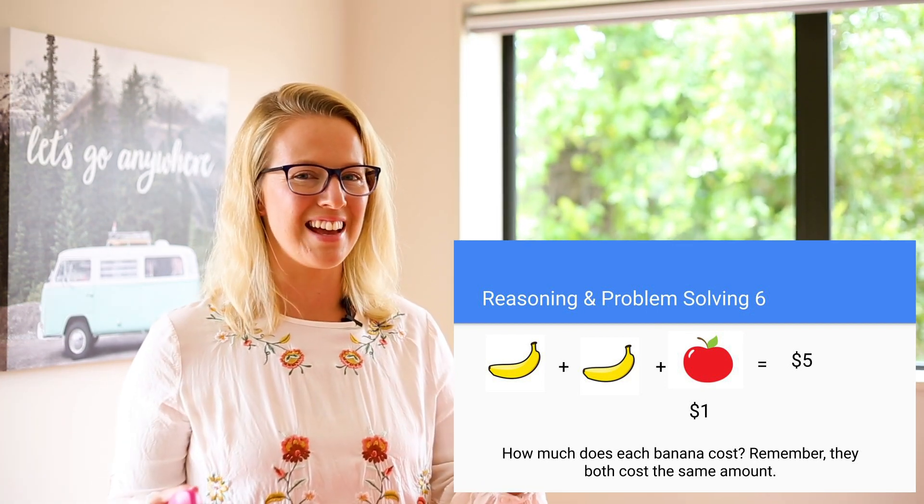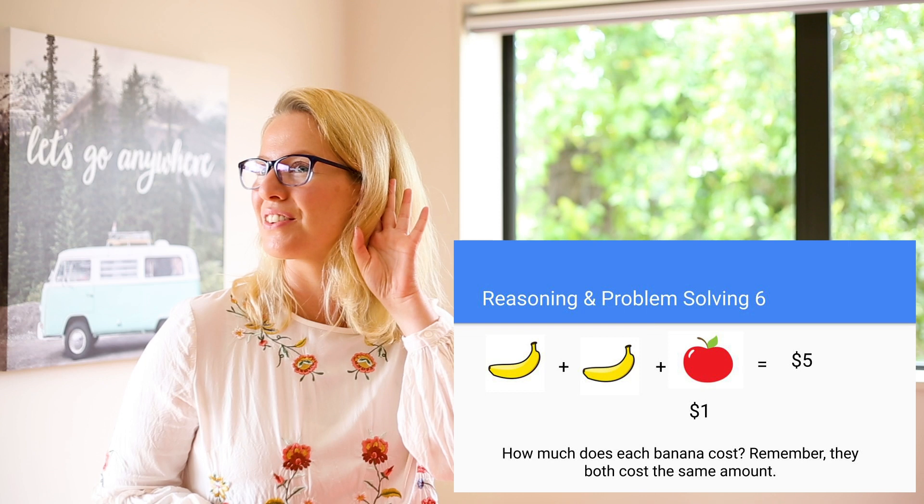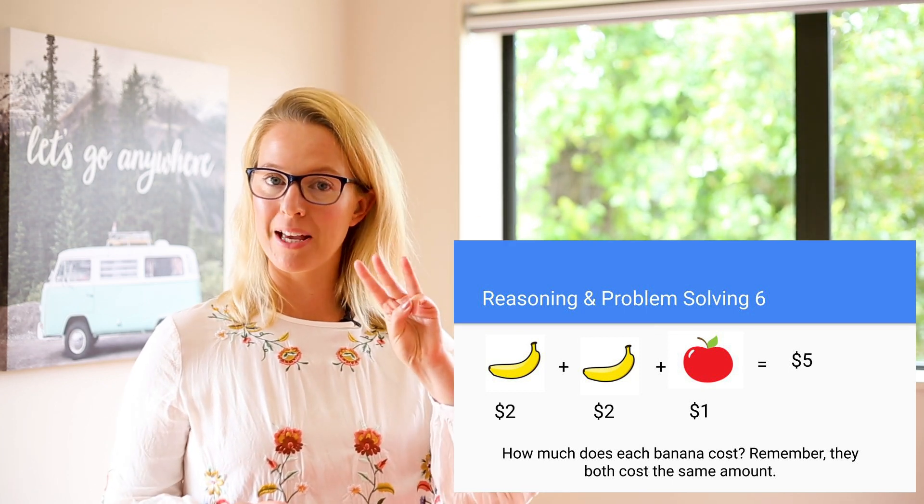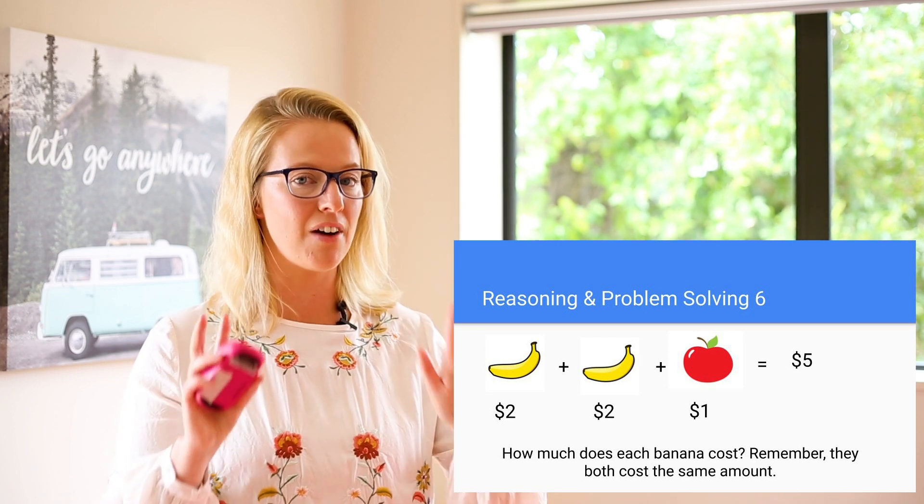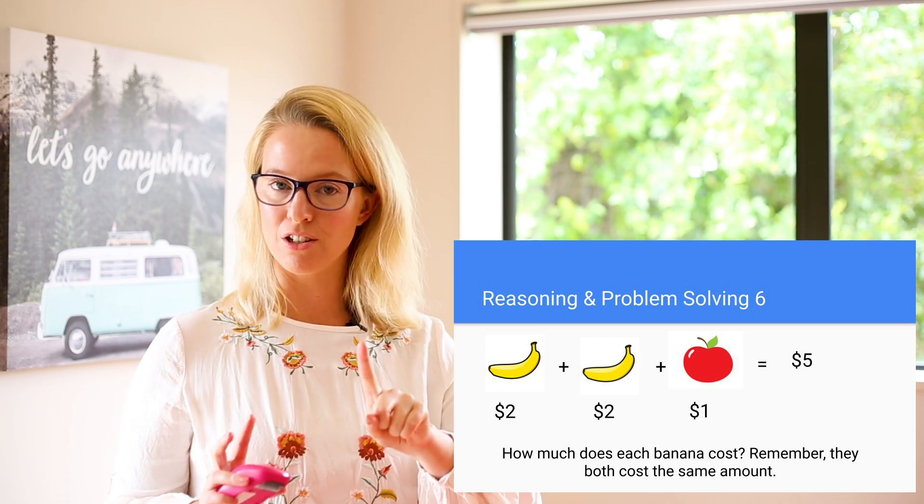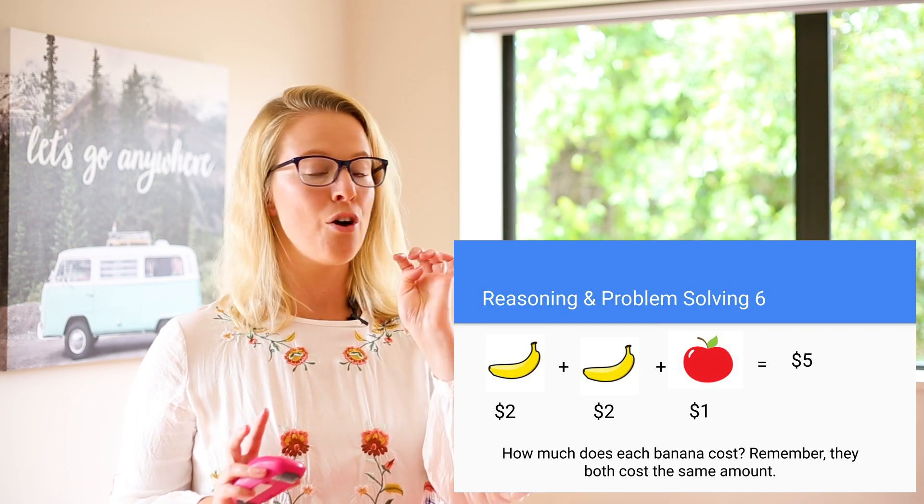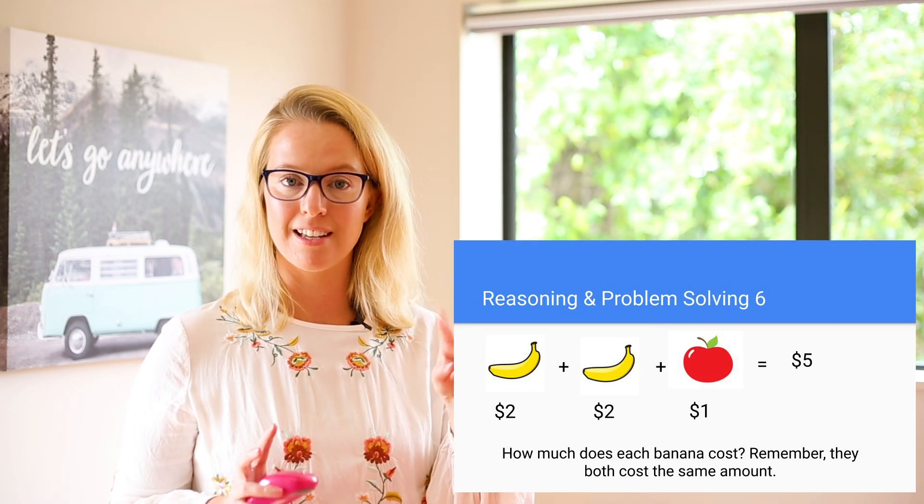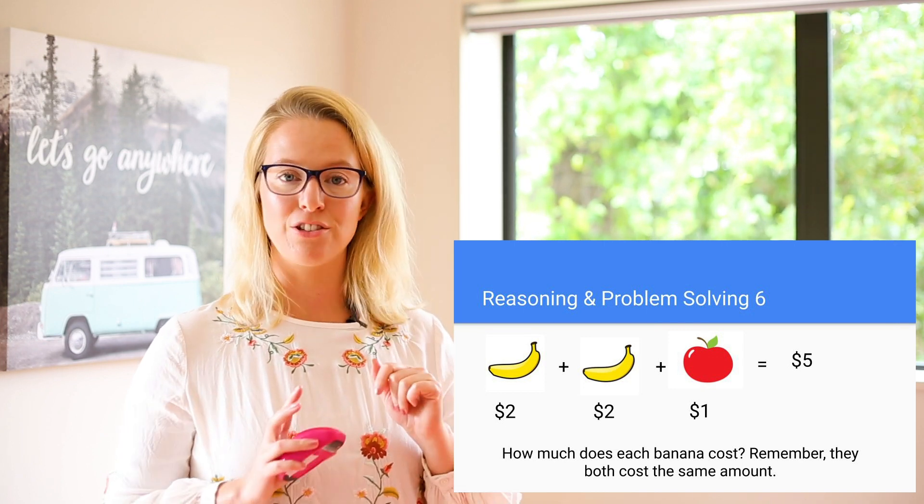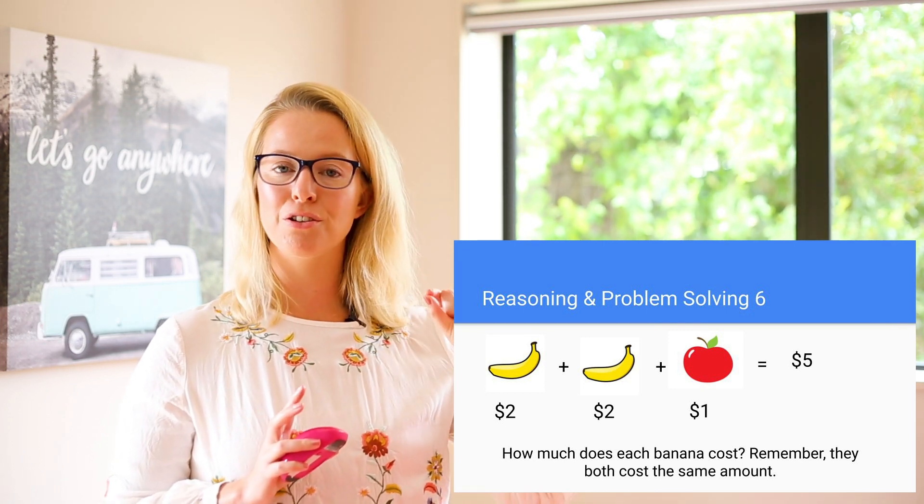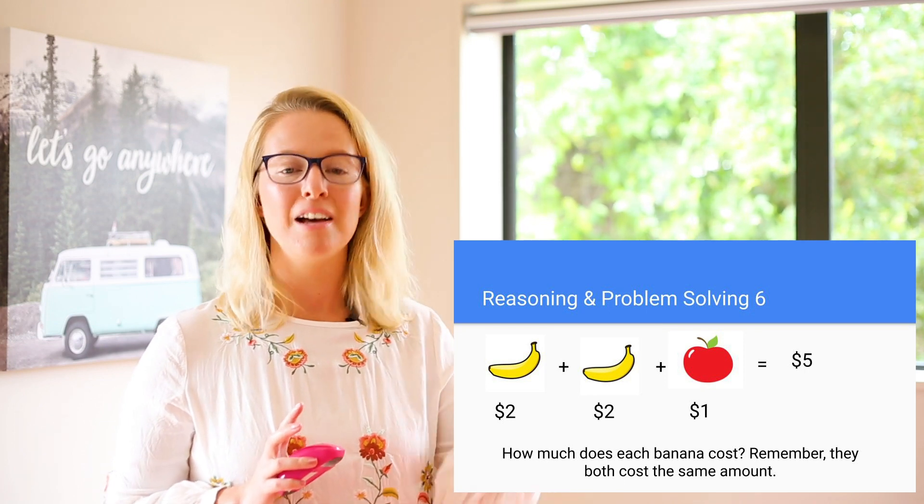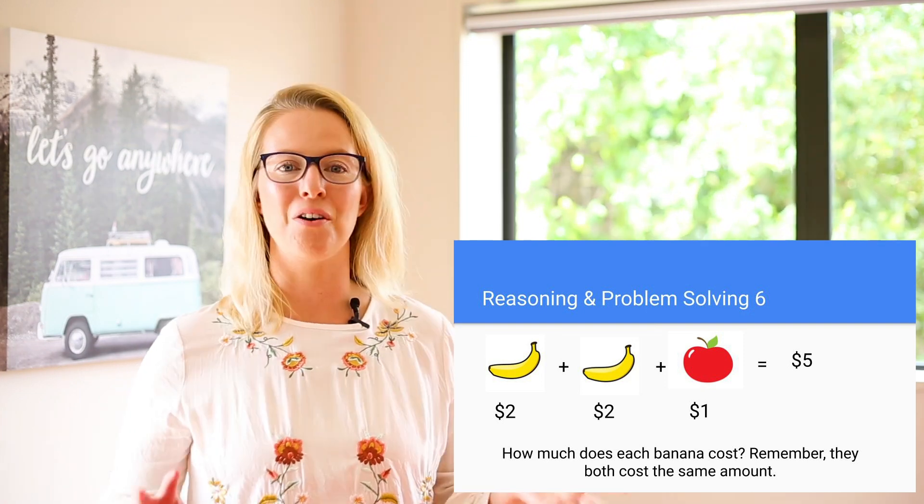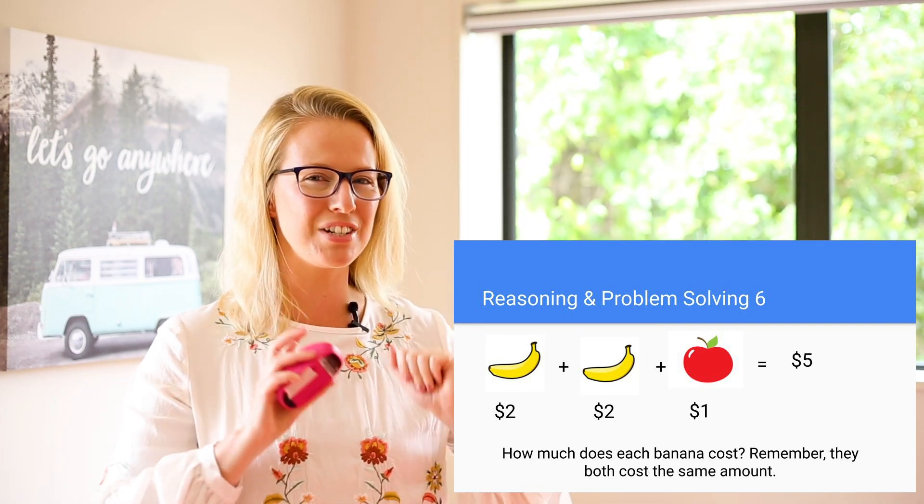Okay, what answer did you get? One, two, three. Well done! So if those three pieces of fruit all together cost five dollars and the apple costs one dollar, then that leaves us with four dollars left. So because there's two bananas and they cost the same, I just thought that one banana cost two and another banana cost two and two plus two plus one equals five dollars. All right, let's move on to our next fruity question.